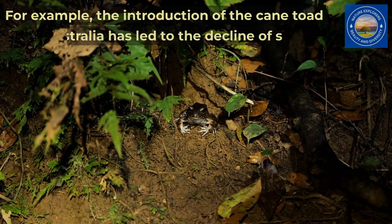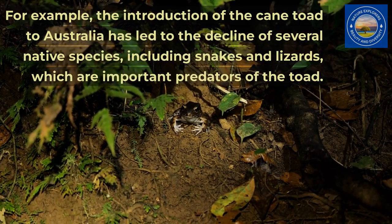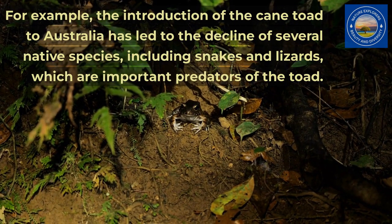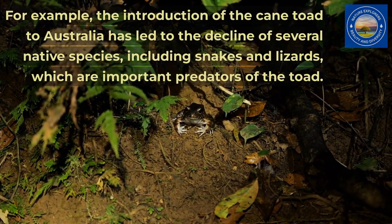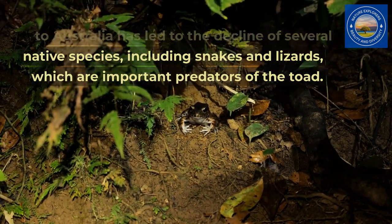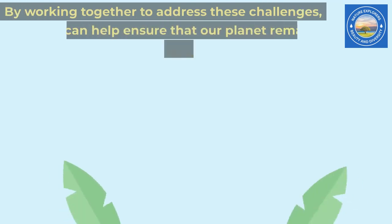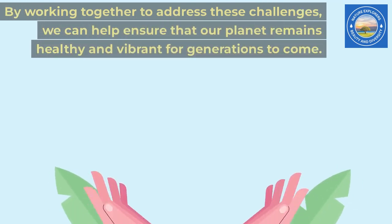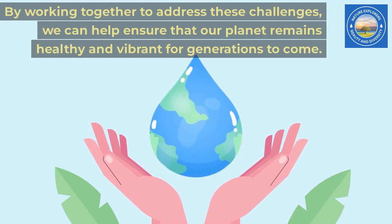For example, the introduction of the cane toad to Australia has led to the decline of several native species, including snakes and lizards, which are important predators of the toad. By working together to address these challenges, we can help ensure that our planet remains healthy and vibrant for generations to come.